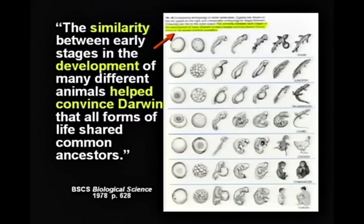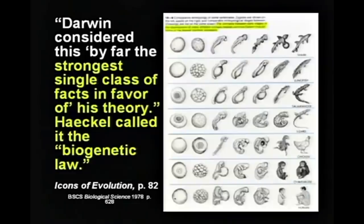When you weren't really going to do anything but pretend to be morally outraged at something you obviously didn't understand in the least. This textbook says the similarity between early stages of development of many different animals helped convince Darwin that all forms of life shared common ancestors. Darwin considered this the strongest class of facts in favor of his theory. This was the best evidence Darwin knew of for his theory.